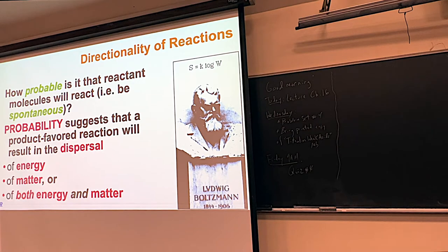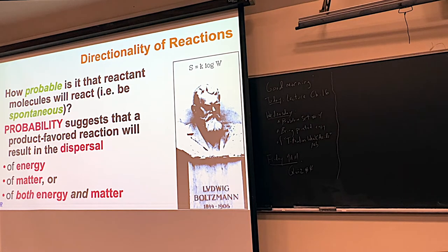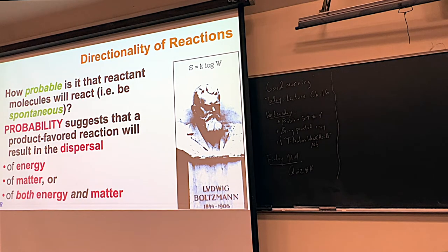So what we're talking about in this section — which gets me all jazzed up — is how to predict if a reaction will occur or won't occur, like a thumbs up or a thumbs down kind of scenario. You can mix any chemicals together; a lot of them just sit there, but some of them explode. Scientists have always wanted to know how to predict if a reaction is going to occur or not. When scientists have looked at all the reactions ever known, they've found that there's a really high probability of the reactants reacting if there's a dispersal of energy, of matter, or of both energy and matter.